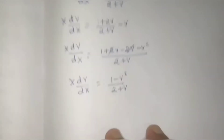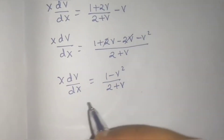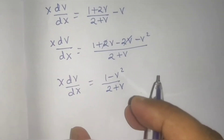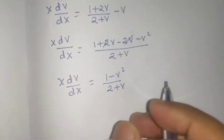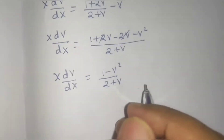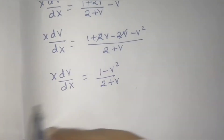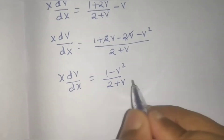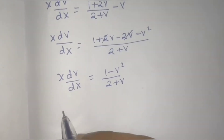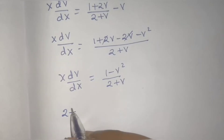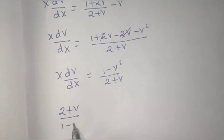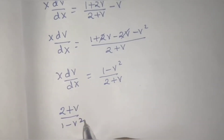This has been converted to variable separable form. Separating variables: (2 + v) / (1 - v²) dv = dX/X. Integrating the right side simply gives log X + log C.